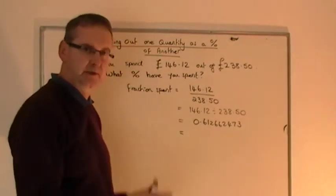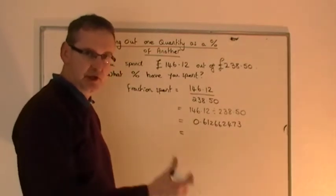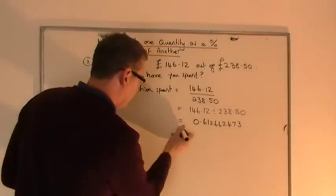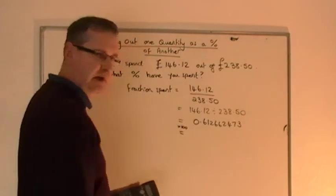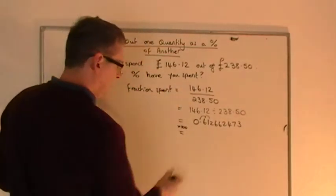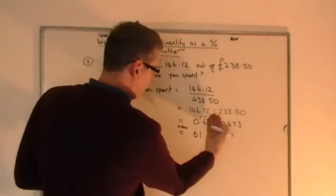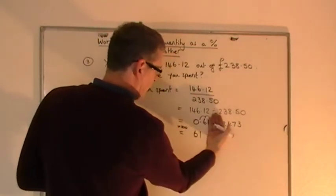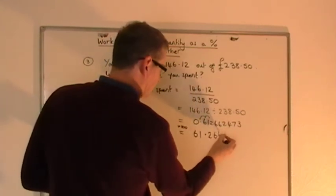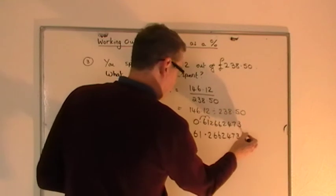Well, you should know that to convert the decimal to a percentage, you can either just look at the pattern, or you can simply times by 100 if you're not sure. Times by 100. Which means you move the point two places. You're going to get 61, there you go, 0.61 is the 61%. And then you put the point. So you're going to get 61.2662473%.